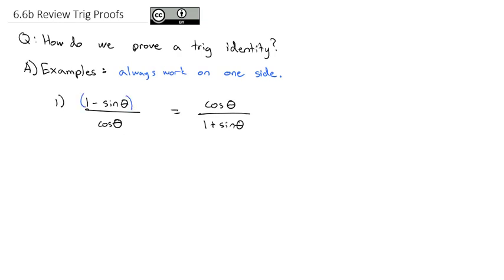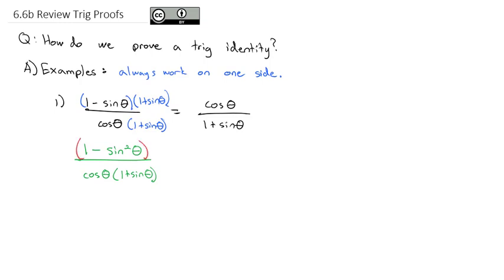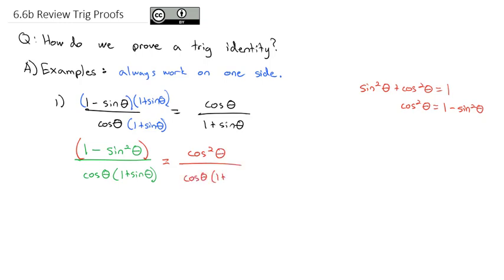1 minus sine has a conjugate of 1 plus sine. When I multiply by that conjugate of 1 plus sine on top and bottom, let's look at what that gives us. When we multiply by a conjugate, we'll end up with (1 minus sine squared theta) over (cosine theta times 1 plus sine theta). Now that becomes interesting because this numerator, 1 minus sine squared, you should recognize from the Pythagorean identity that sine squared theta plus cosine squared theta equals 1. And if I subtract the sine squared from both sides, cosine squared equals 1 minus sine squared theta.